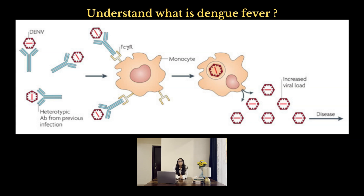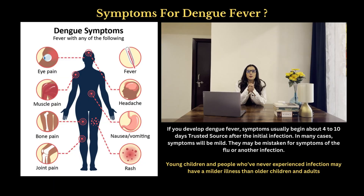All four serotypes are transmitted from human to human through the bite of certain species of Aedes mosquitoes. The viruses that cause dengue fever are related to those that cause yellow fever and West Nile virus infection. Once you have been infected, you can get immunity to that version of the dengue virus. However, because there are at least four strains of DENV, this is complicated — your immune system develops antibodies that recognize and fight off that specific strain.